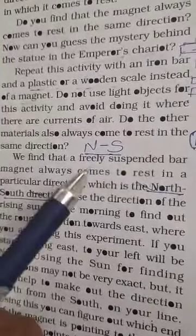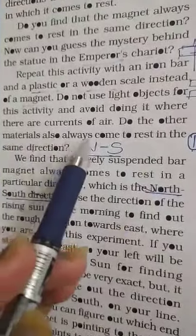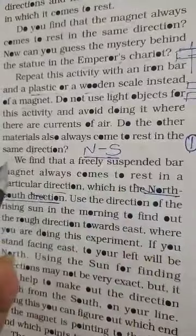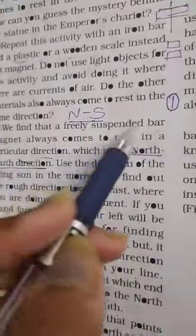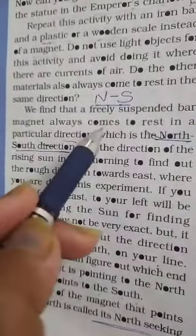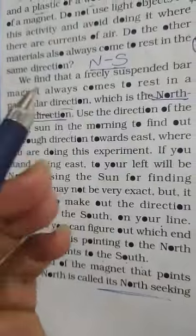Do the other materials also always come to rest in the same direction? We find that a freely suspended bar magnet always comes to rest in a particular direction, which is the north-south direction.